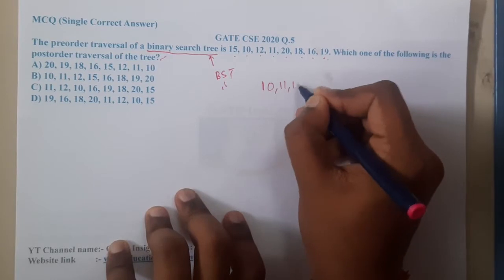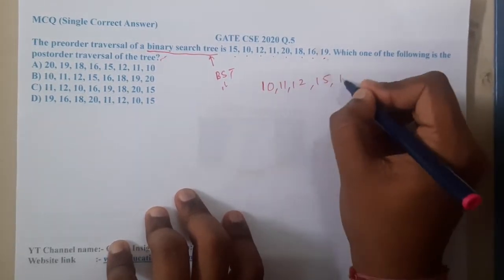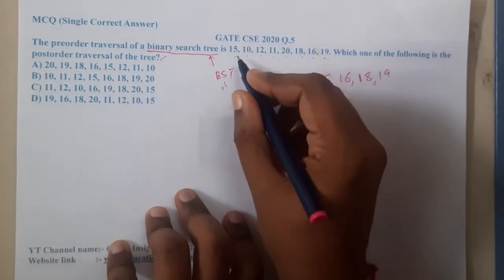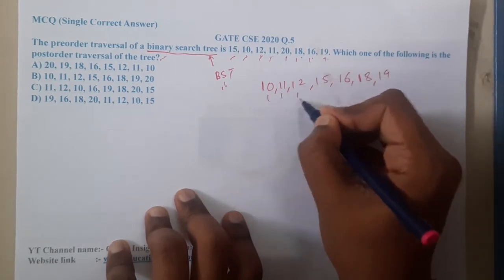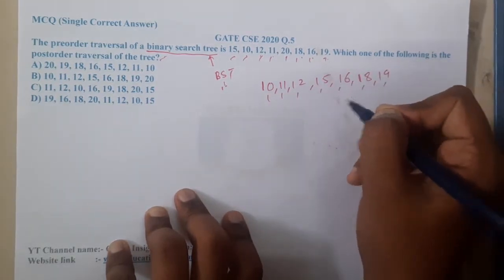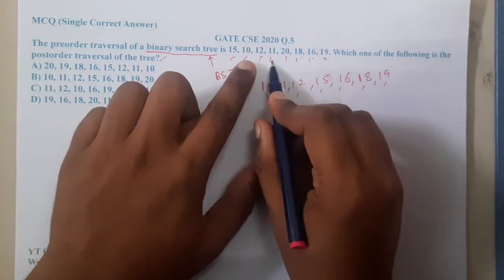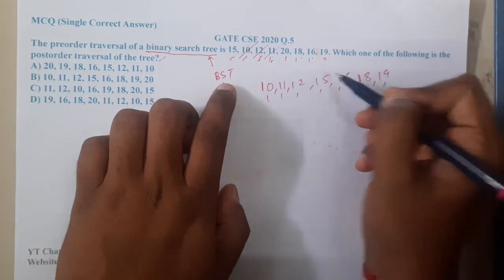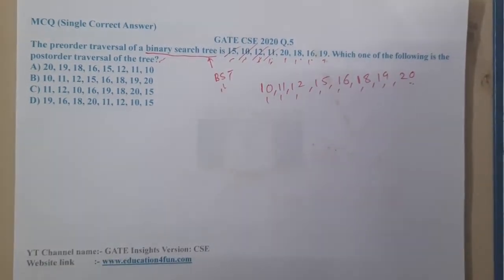So what is the ascending order? 10, 11, 12, 15, 16, 18, 19. Did I cover all the numbers? One, two, three, four, five, six, seven, eight. I think I missed a number - I missed 20. So now I've got all the numbers: 10, 11, 12, 15, 16, 18, 19, 20. This is the inorder sequence.